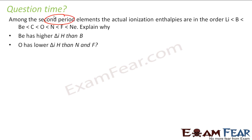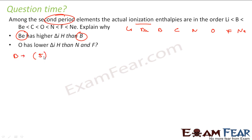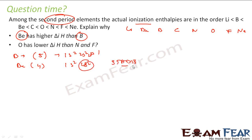In the second period elements, the actual ionization enthalpies follow this order: Li, Be, B, C, N, O, F. But if you look carefully, beryllium has higher ionization enthalpy than boron — why? Boron is atomic number 5: its configuration is 1s², 2s², 2p¹. Beryllium's outermost 2s orbital is completely filled, making it stable. Since beryllium is stable with a filled 2s subshell, it does not allow electrons to be removed easily, so it has higher ionization enthalpy than boron.